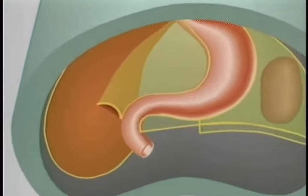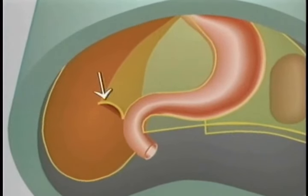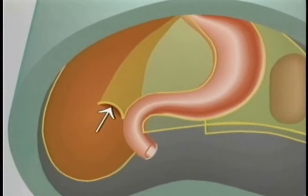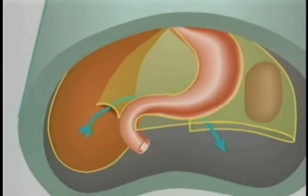This is the lower free border of the lesser omentum. Below it, the duodenum becomes stuck against the liver, leaving this opening — the epiploic foramen — that leads into the lesser sac.